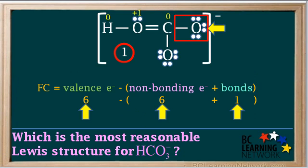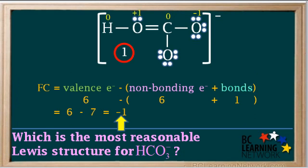You can see that this oxygen atom has 6 valence electrons, 6 non-bonding electrons as shown by the dots, and 1 bond. So its formal charge is 6 minus 7 which is equal to negative 1.